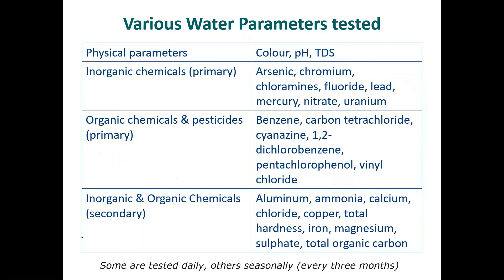There's a little chart with some of the parameters that are measured. The main things measured on-site are total dissolved solids, color, and temperature. Many other things are sent to an external lab — they're looking at things like arsenic, chromium, and benzene, just to check how their treatment is doing.